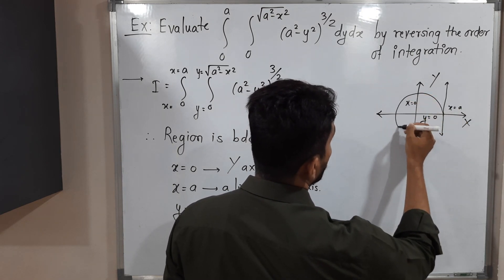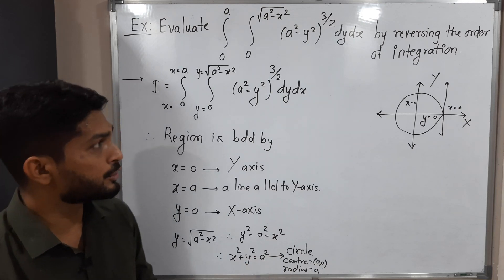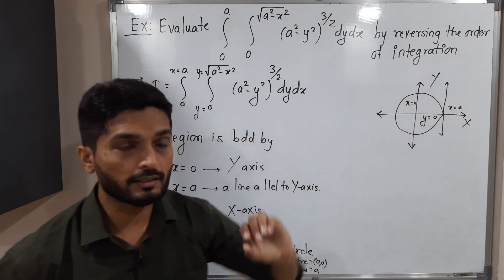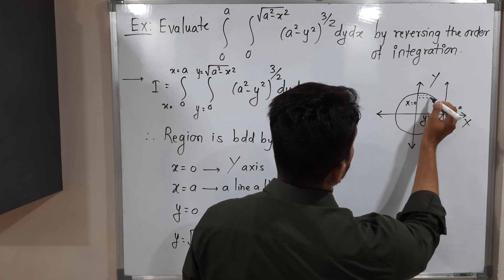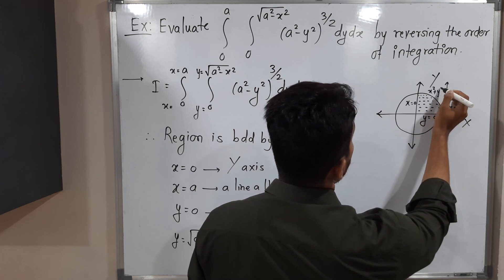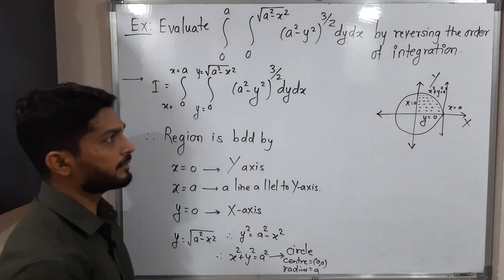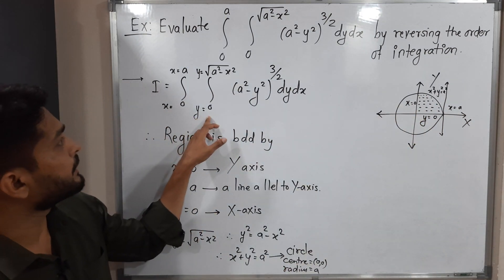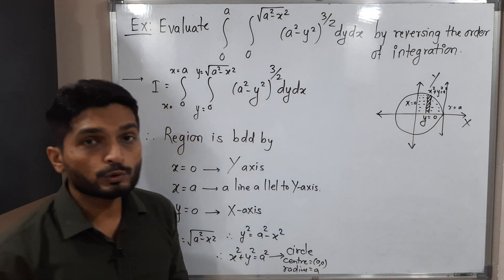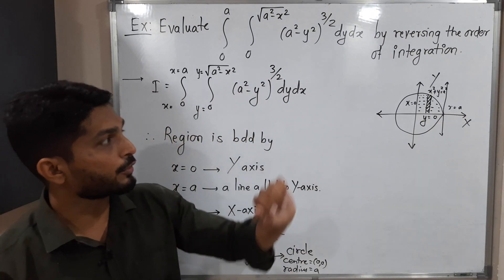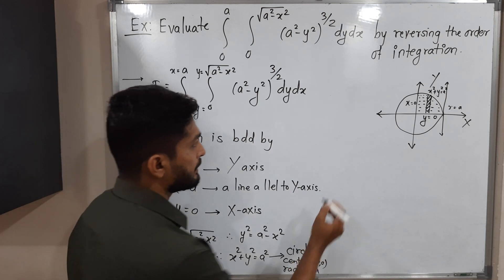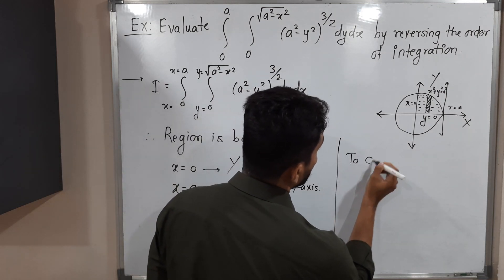Let us draw the circle with center (0,0) and radius a. The region is bounded by the y-axis, the x-axis, the line x=a, and the circle x²+y²=a². So the region is this shaded area. The given strip is parallel to the y-axis since the inner integration is with respect to y. But we have to change the order of integration, so we need to draw a strip parallel to the x-axis.